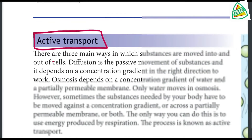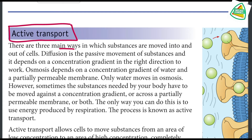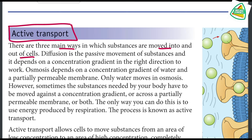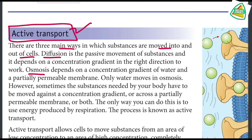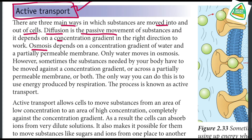There are three main ways in which substances are moved into and out of cells. These are diffusion, osmosis, and active transport. Diffusion is a passive process — passive transport — where movement occurs along the concentration gradient, from high concentration to low concentration.